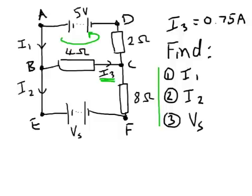Around A, B, C, D. So if we consider A, B, C, D, the sum of the voltages around there has to be 0.